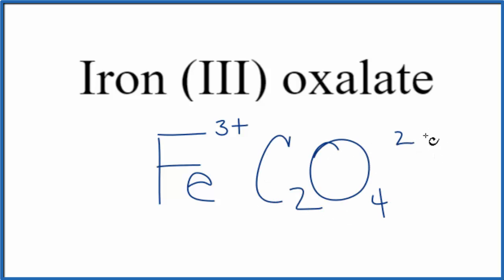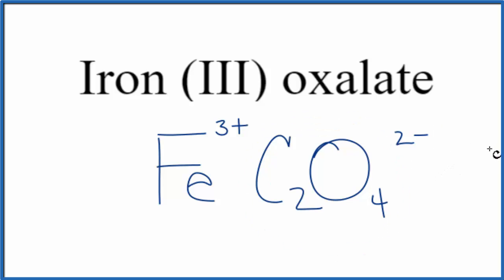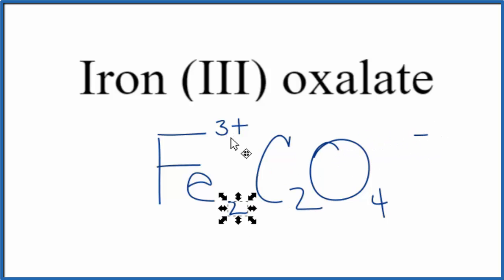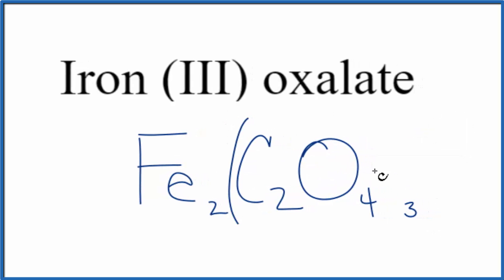The oxalate ion is C₂O₄²⁻, and that 2− applies to the whole ion. Because we have a metal (iron) paired with non-metals, this compound is ionic, so we need to balance the charges. We'll use the crisscross method — move the 2 here and the 3 out — and put parentheses around the oxalate ion.